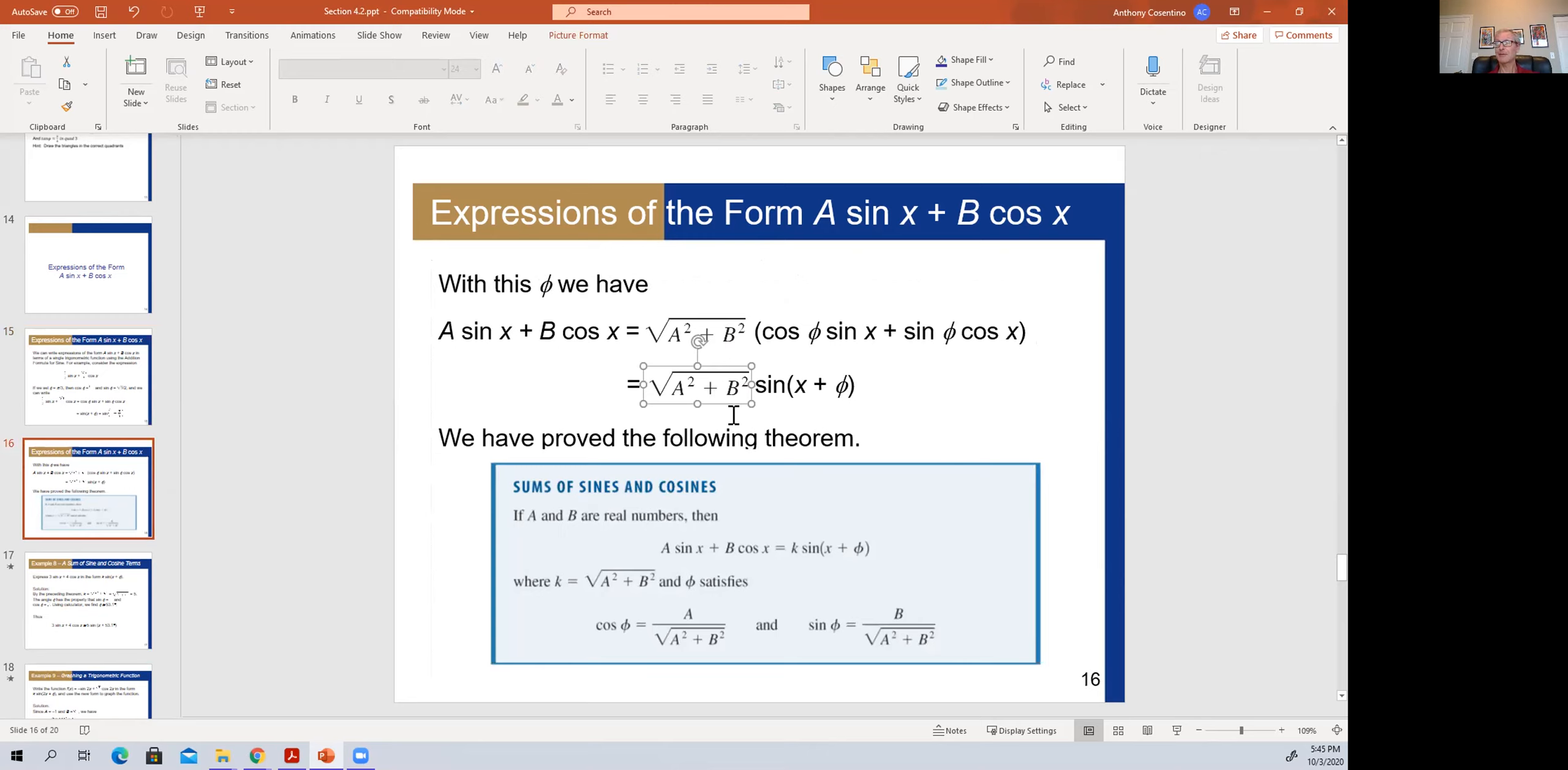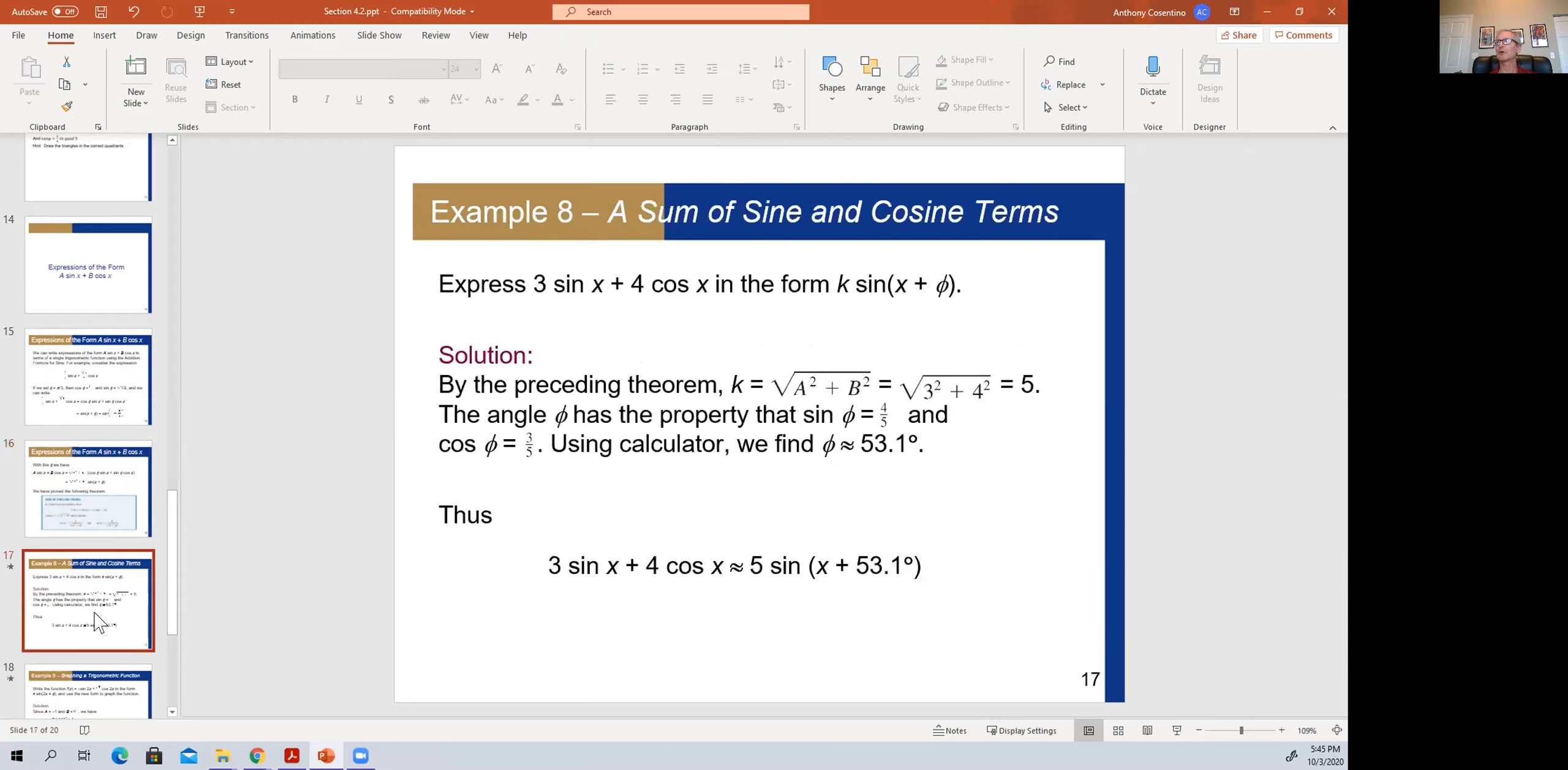We've taken this concept and introduced this formula where if you have A sin(x) and B cos(x), you can combine it using the addition formula for sine and you end up with a formula that looks like this. We call this K, where K is the square root of A squared plus B squared. Theta is calculated using inverse cosine or inverse sine. Remember K is on the bottom and the A's and B's are on the top.